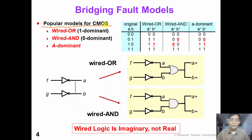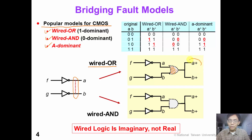There are three types of popular bridging fault models for CMOS technology: the wire-OR model, the wire-AND model, and the dominant model. In this picture, suppose that signals A and B have a bridging fault. If we model it as a wire-OR, we would insert an imaginary wire-OR logic gate, so the output A+ and B+ is the OR operation of the original A and B.